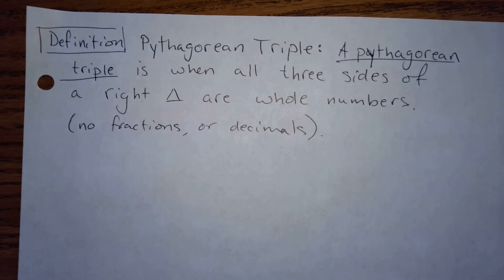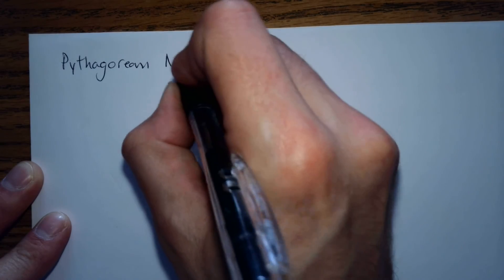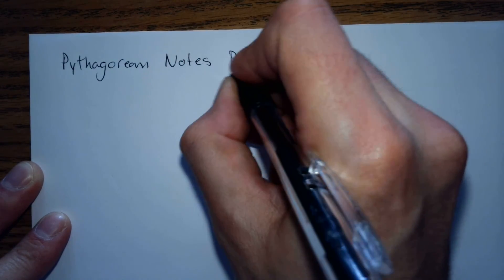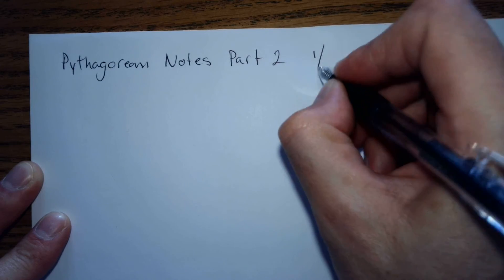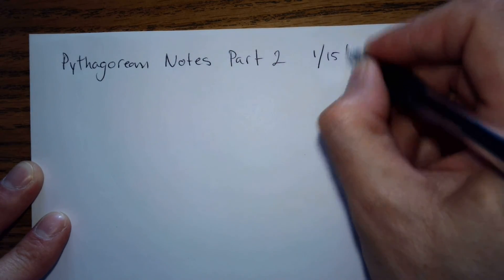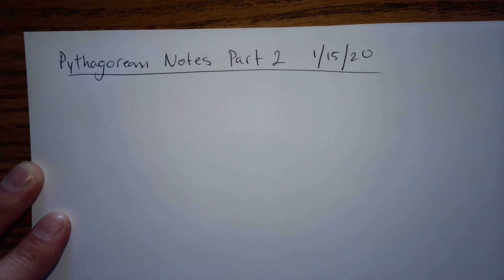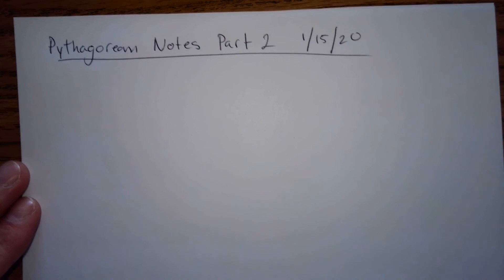Last, okay. So the next part is the new stuff. And it's pretty simple. So we will see. What do we have? Where's my pants? So I'm going to call this Pythagorean Notes Part 2. That way, it's just into two separate notes. And that's the date today. 1-15-20. Pythagorean Notes Part 2.